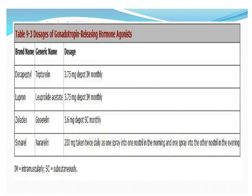A table shows different GnRH analogs and their doses. Triptorelin is a depot preparation given intramuscularly. Goserelin is the most popular drug, available as Zoladex, given in a dose of 3.6 milligrams subcutaneously monthly. All of these are given as monthly injections.